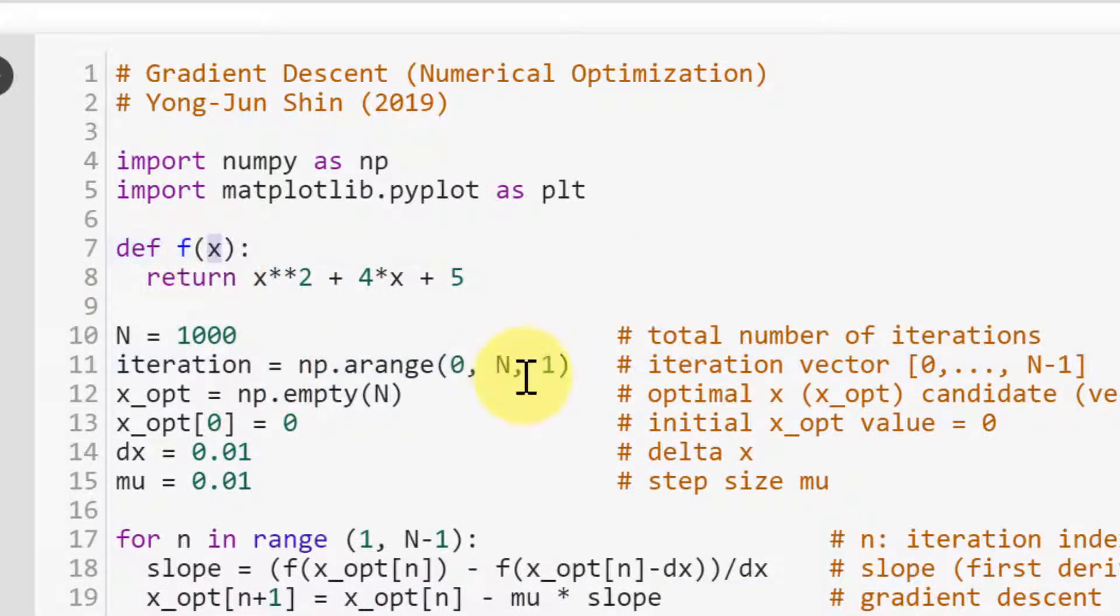This function takes x as input, and the output is x squared plus 4x plus 5. So this function returns this value given this x value.